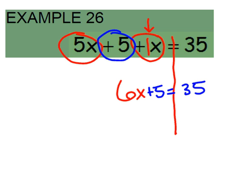Next we can start to solve it which means we want to start with our constant on the side of the variable. So on the side of the variable we have a constant of positive 5 which we can inverse with a negative 5.